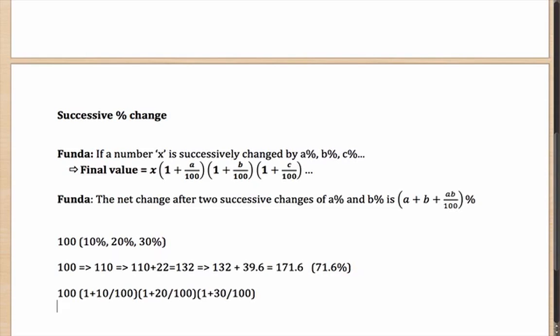Which if you notice carefully is nothing else but 100 into 1.1 into 1.2 into 1.3. And if you multiply this 1.1 into 1.2 into 1.3 into 100, do you know what value you are going to get? Yes, you are going to get the same value that you had got above, 171.6.